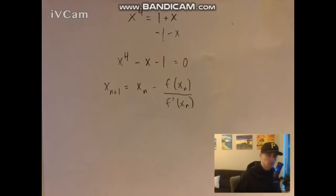In this case, we want to get correct to six decimal places. That means we want to get to a point where the first six decimal places are the same twice in a row. Once that happens, we know it's correct to those six decimal places.